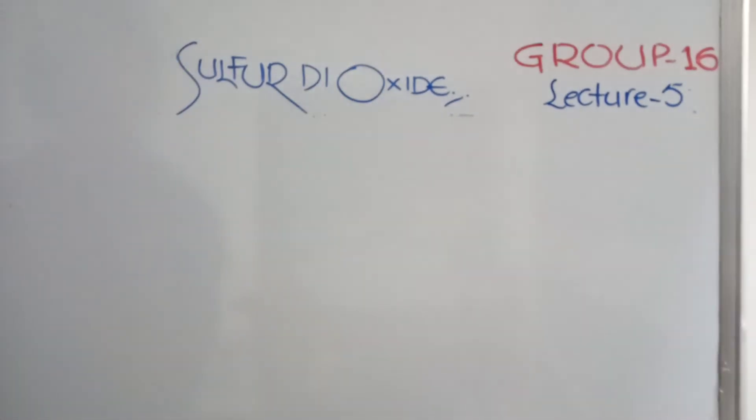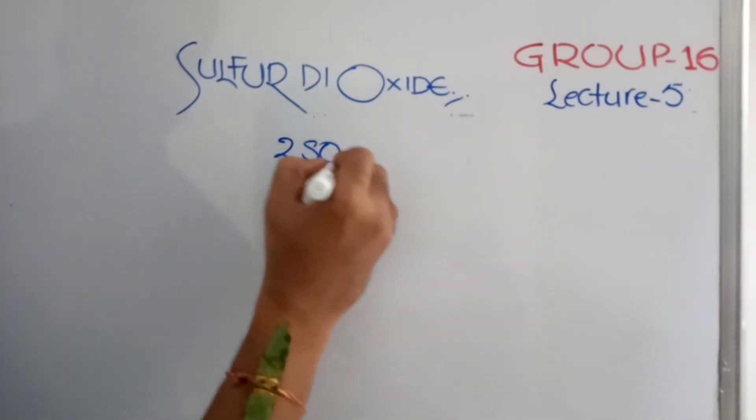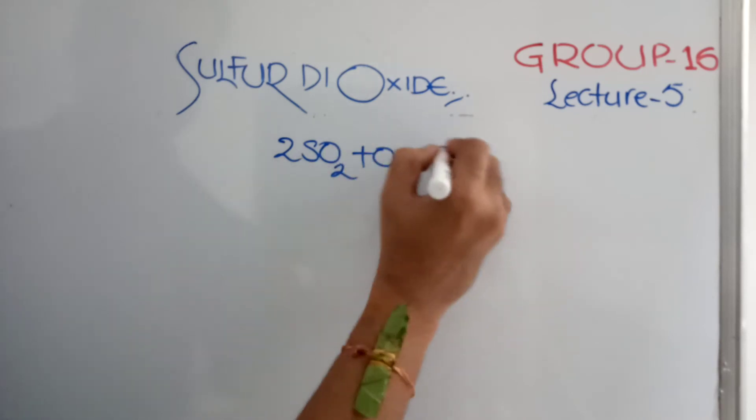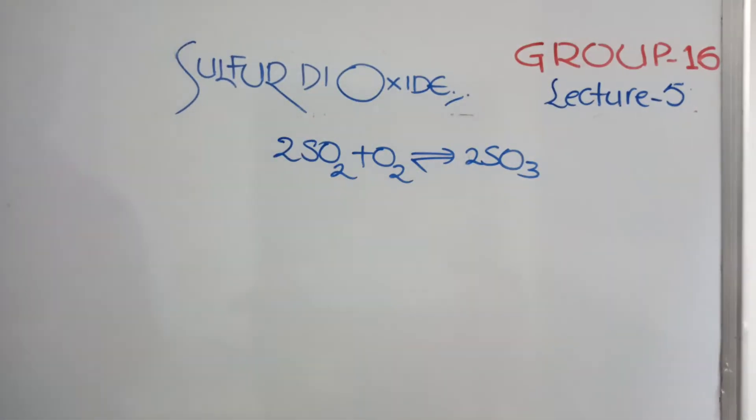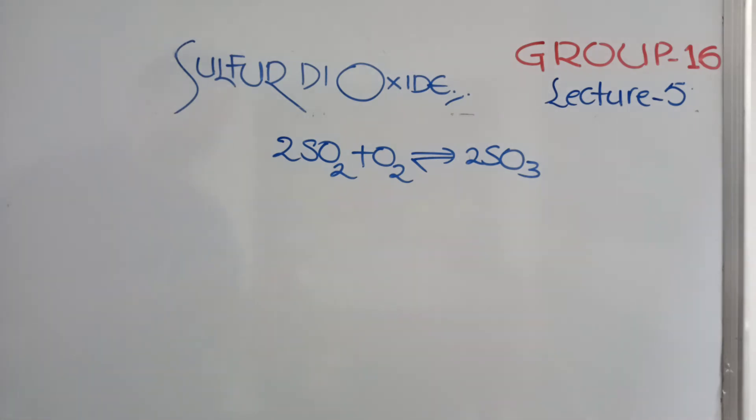Next is, when Sulfur Dioxide is heated with Oxygen, what happens? Sulfur Dioxide plus Oxygen gives Sulfur Trioxide, this is a reversible change. We were discussing this in Le Chatelier principle. Delta H is equal to negative. The pressure should be more. Temperature should be less. All the Le Chatelier principle conditions, you can remember here.